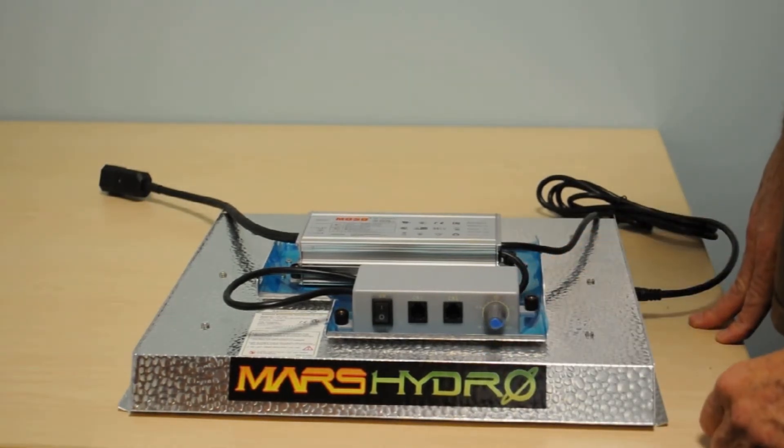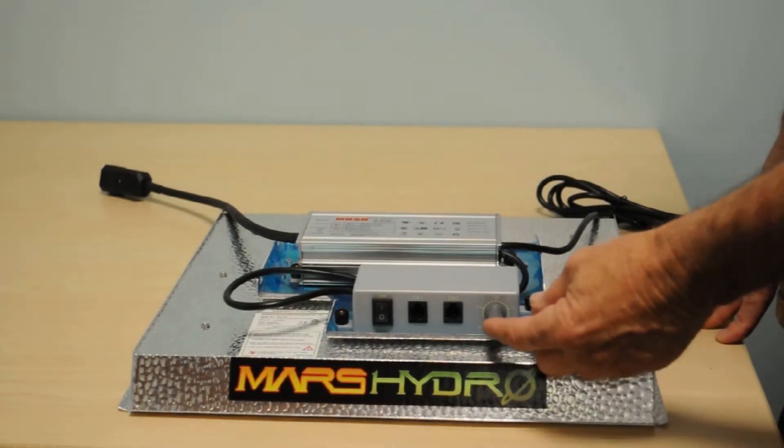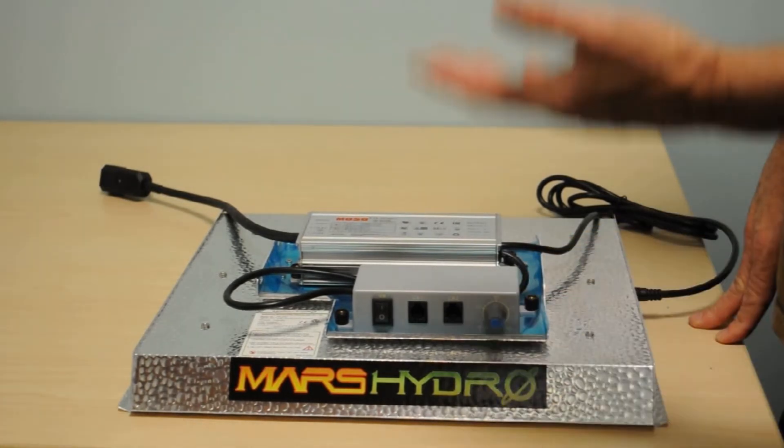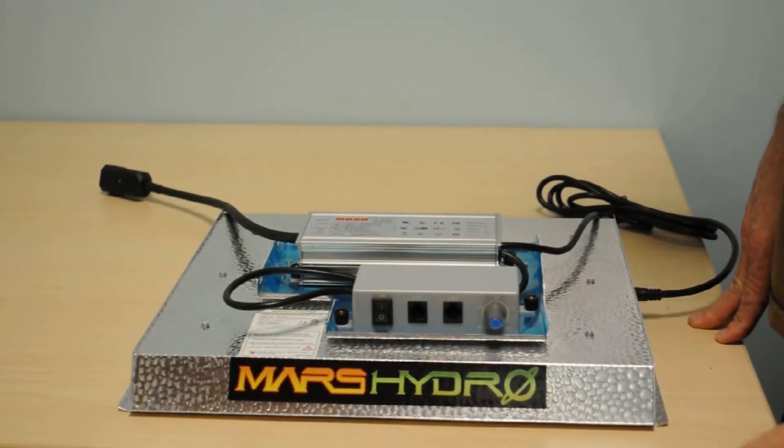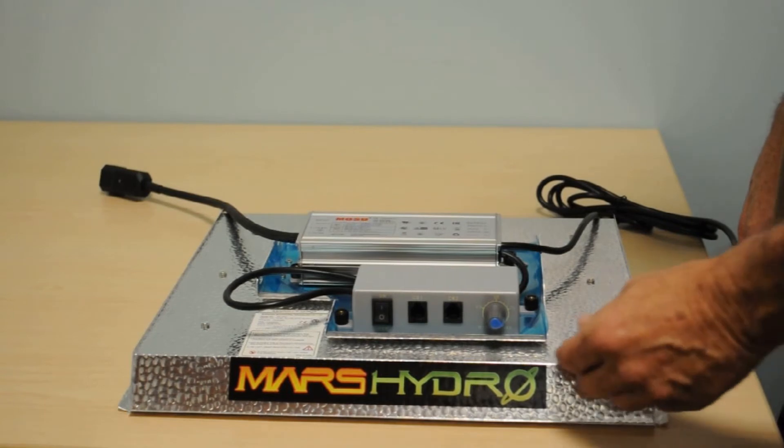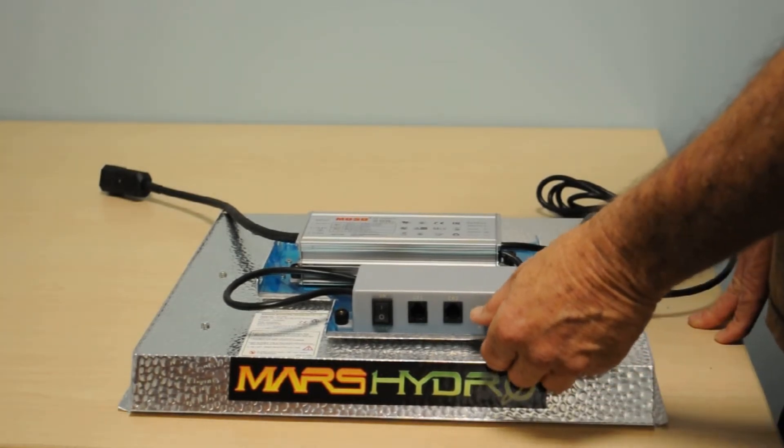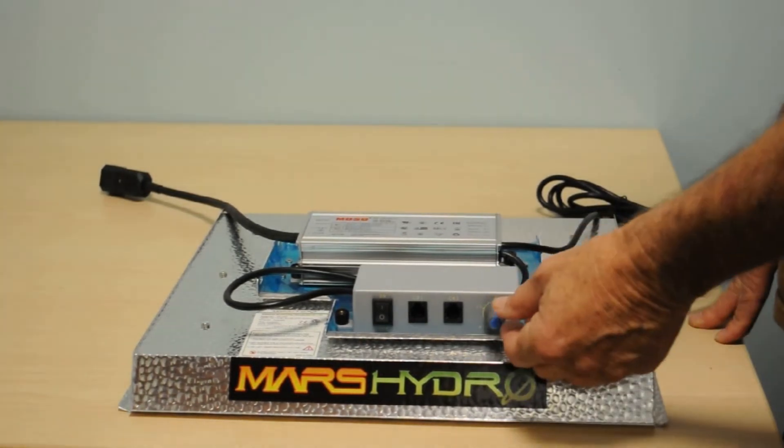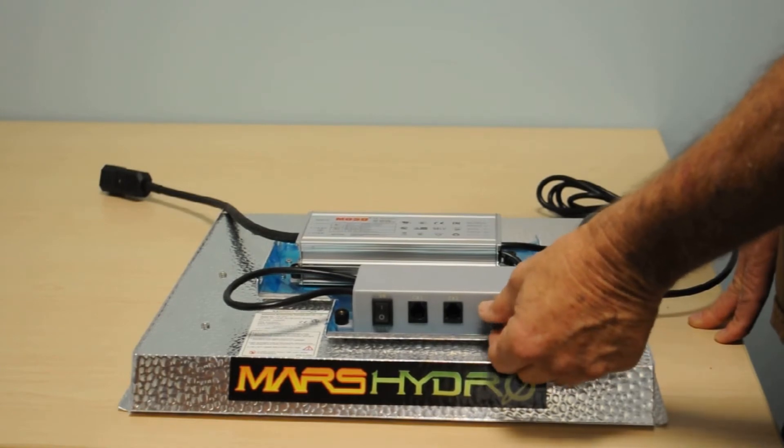You know, we love the dimmer switches. It's so much easier to turn the knob on a dimmer rather than raising or lowering lights. Also, you may have a tent with some height restrictions. Maybe you can't raise the lights any. In that instance, you would just turn the lights down while the plants are little and then as they get bigger and start to flower, you can crank up the volume on the lights.